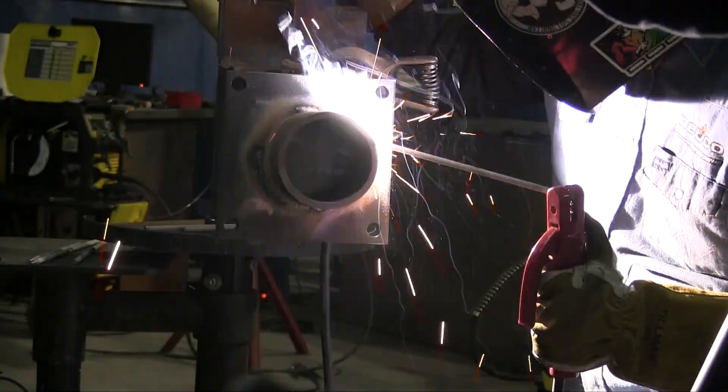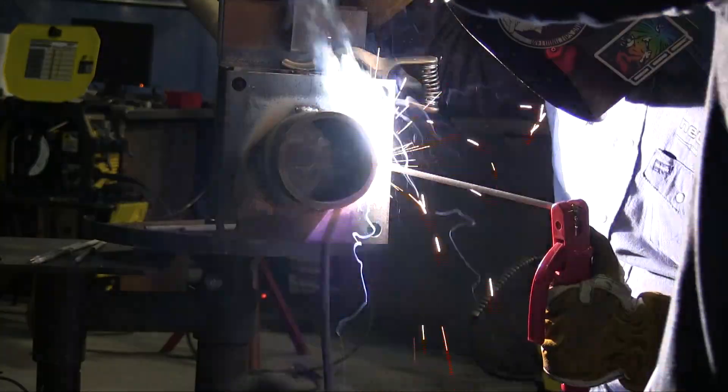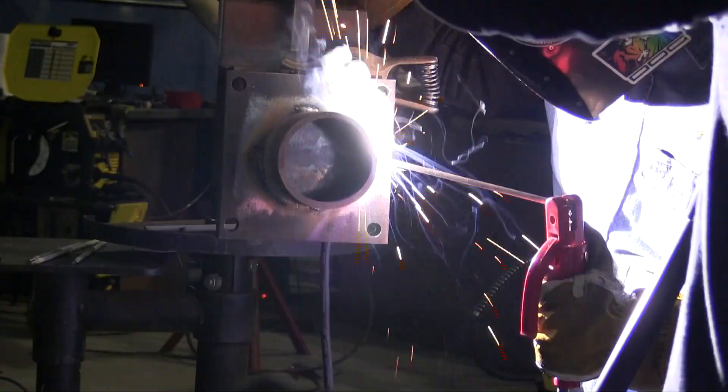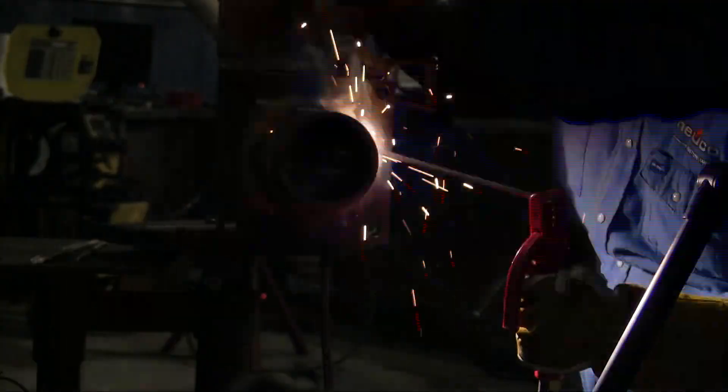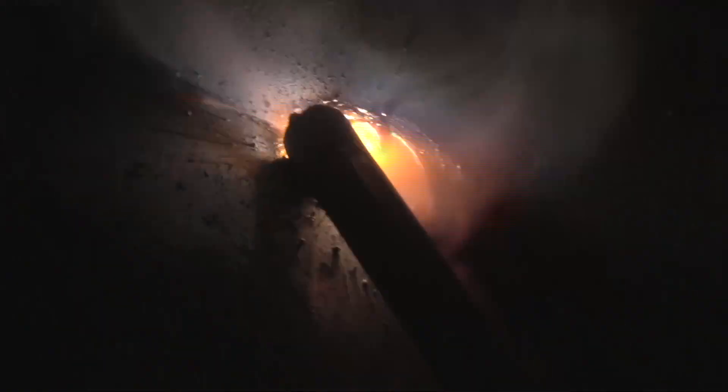Here we go. Here's a restart. Andrew always strikes his arc a good inch or so in front of the crater and drags it back down into the crater, and then welds over top of all that stuff that he dragged down there so he doesn't have any arc strikes outside of the weld bead.